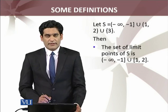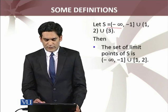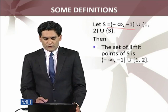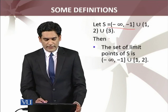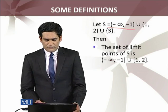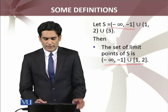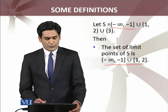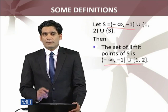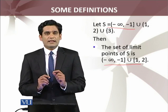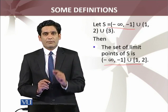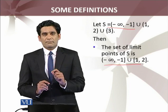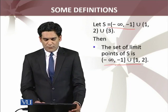Let us discuss an example. Let S be the set which is the semi-infinite interval (-∞, -1] union [1, 2] union {3}. Then the set of limit points of S is (-∞, -1] union [1, 2]. According to the definition of limit point, for any epsilon greater than zero, the deleted neighborhood of any point in this set will always have a nonempty intersection with S.